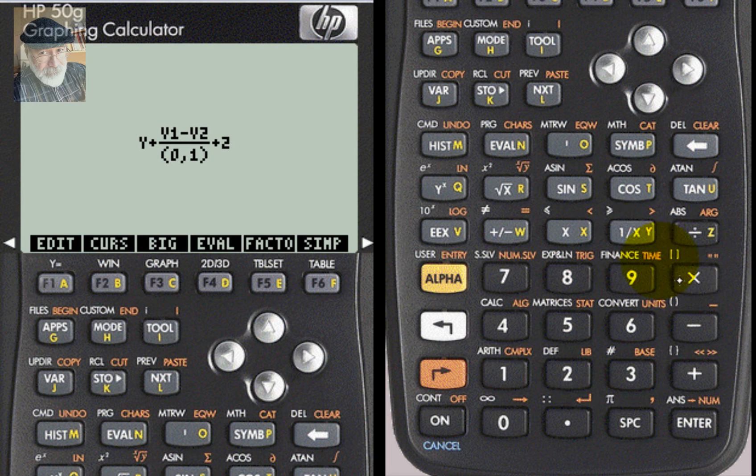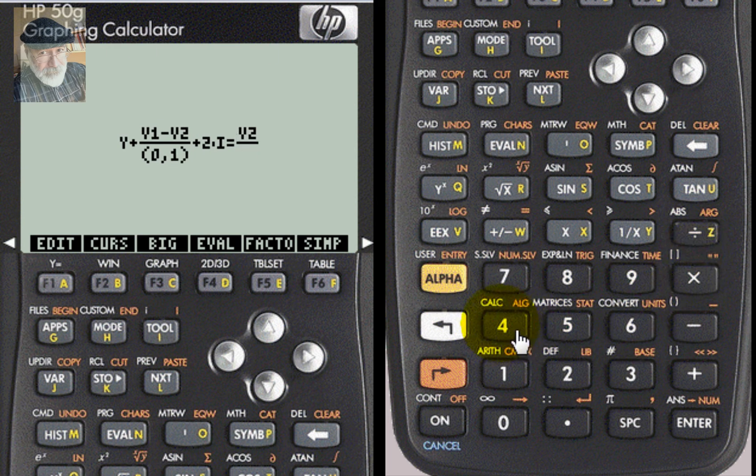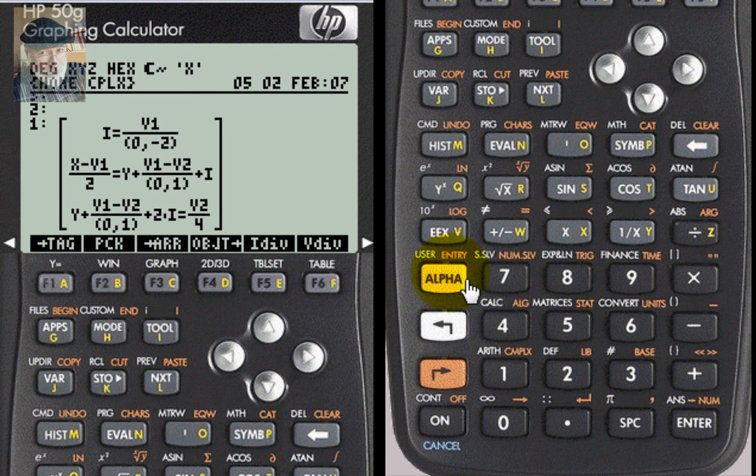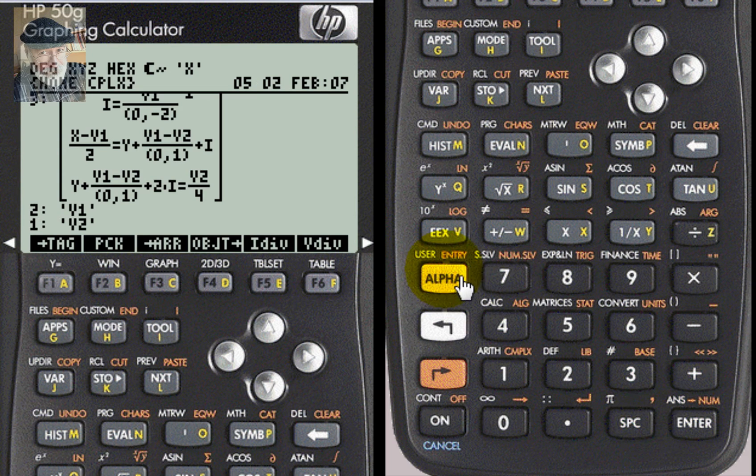And soon enough, we are ready to solve this system of three equations with three unknowns, v1, v2, and i, as a function of x and y. There you go. Three equations and three unknowns. And the three unknowns I want to solve for are v1, v2, and i.